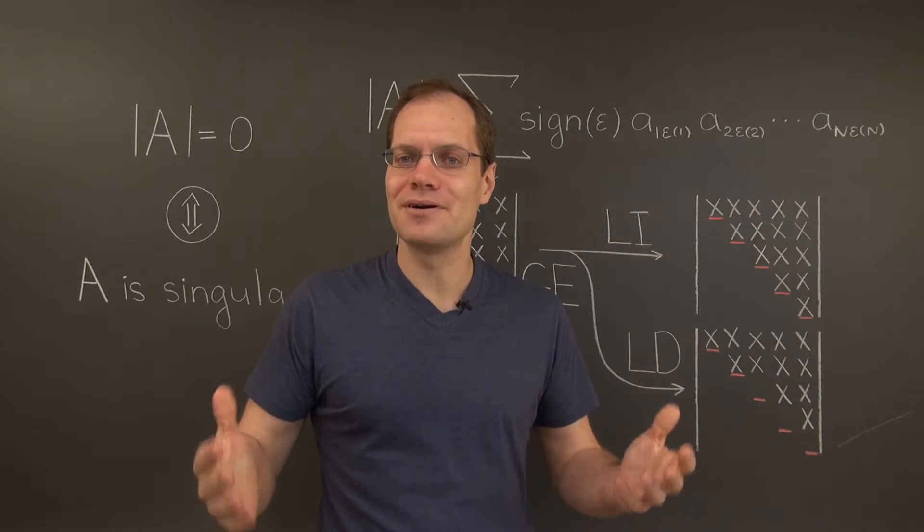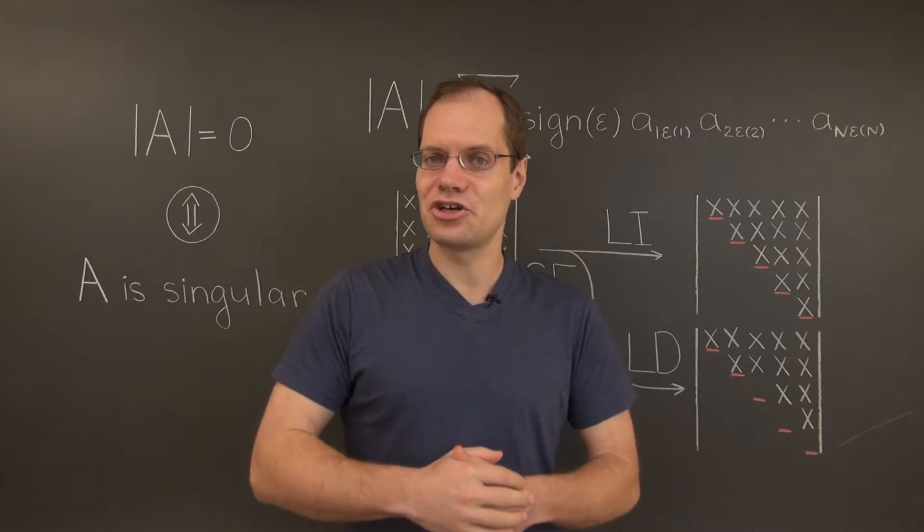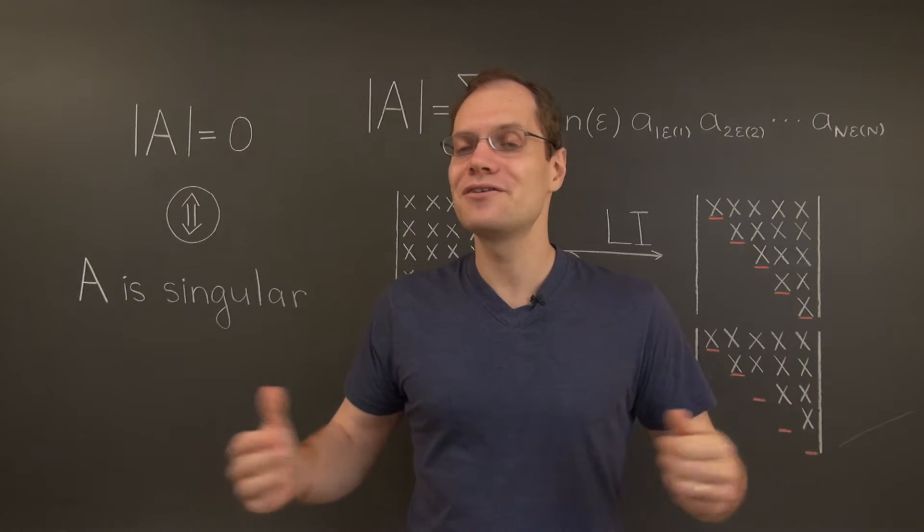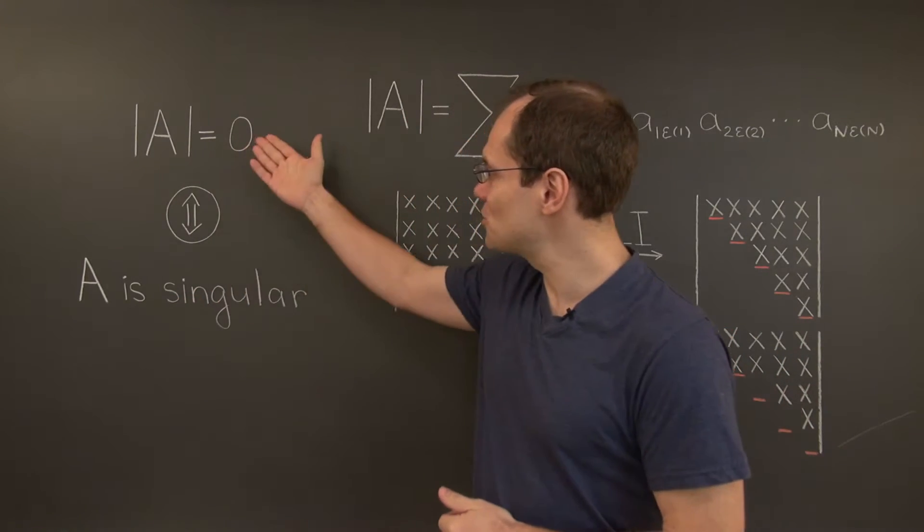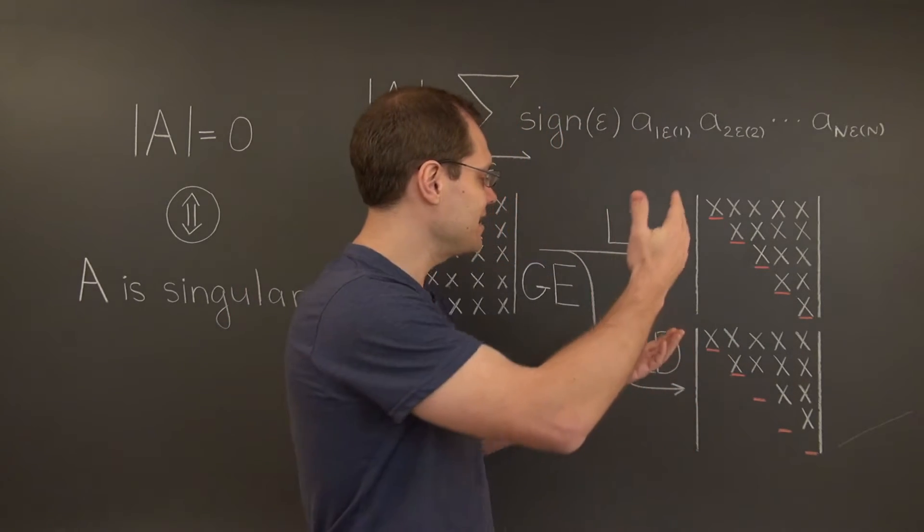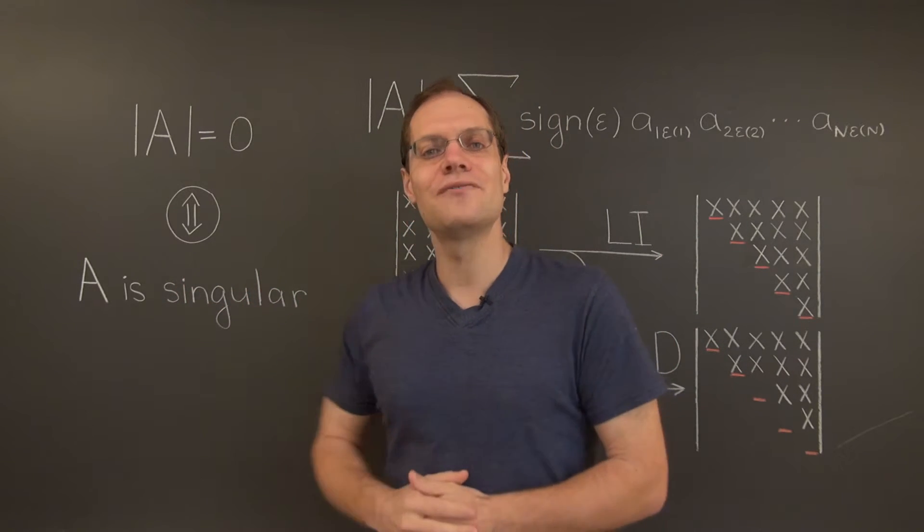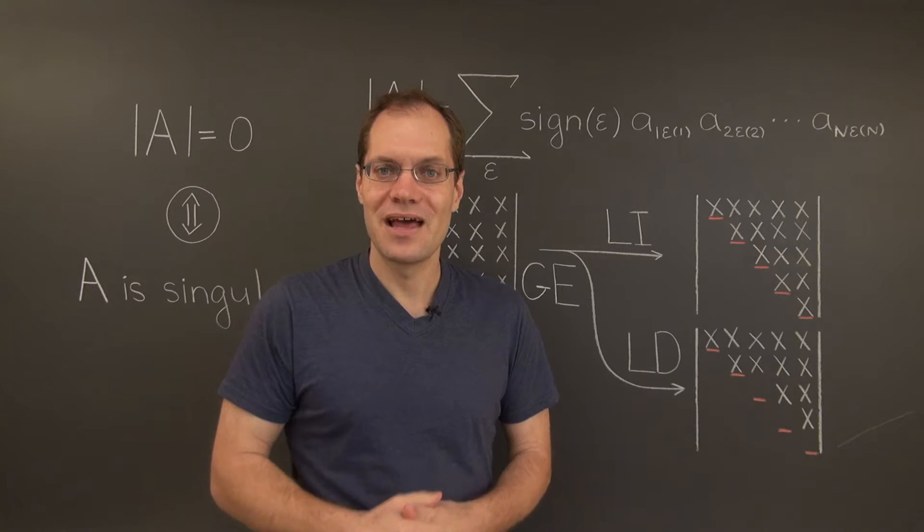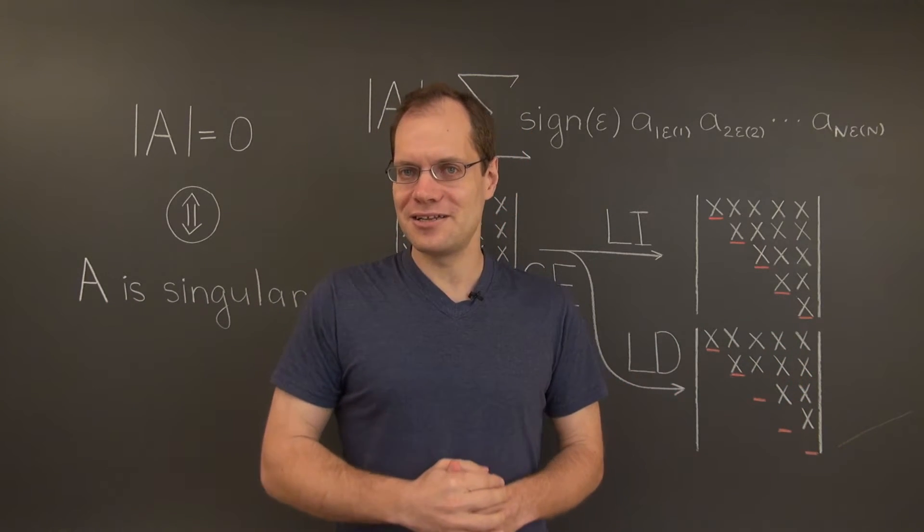Multiplying a row by a number that's not zero - that too is capable of changing the determinant, but not whether or not it's zero. So Gaussian elimination indeed preserves the correctness of each one of these statements. So whatever we find at the end of Gaussian elimination was also true of the original matrix.